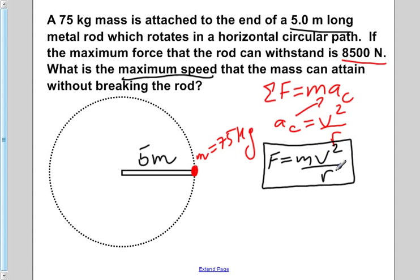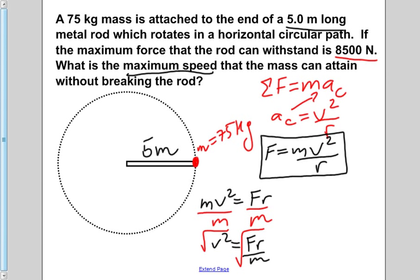We're trying to solve for v. The first thing we're going to do is multiply both sides by r, giving us mv squared equals f times r. We're then going to divide both sides by m, giving us v squared equals fr over m. And then, since we want just v instead of v squared, we have to take the square root of both sides.